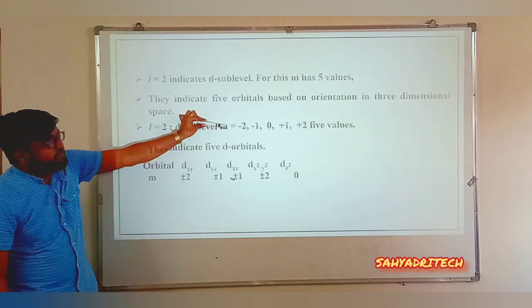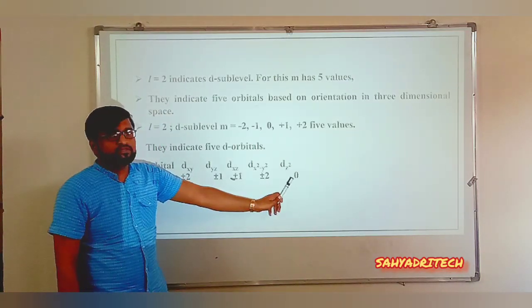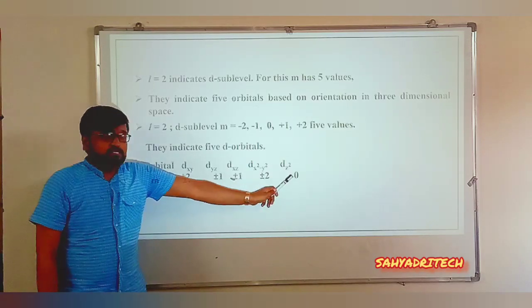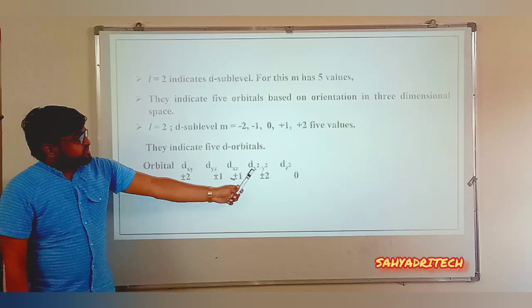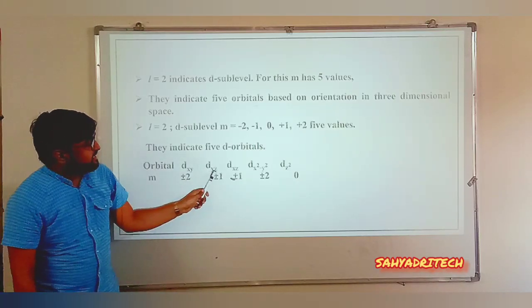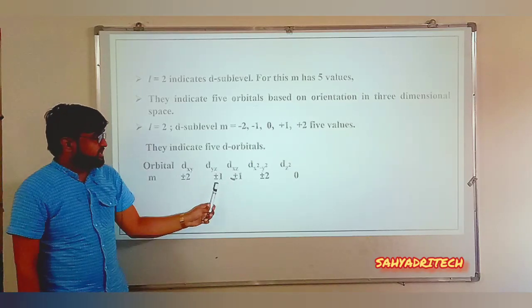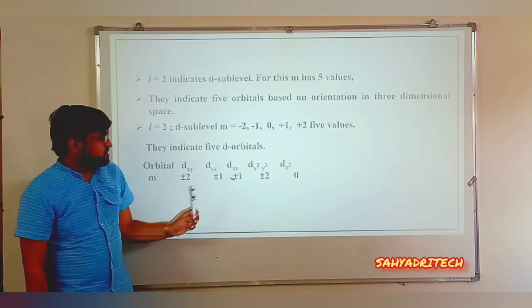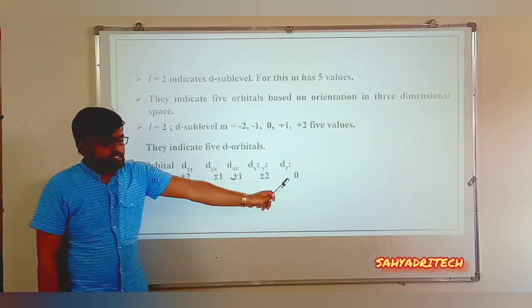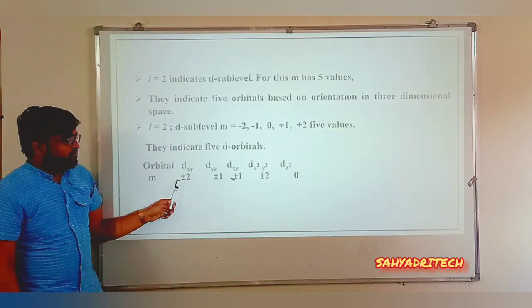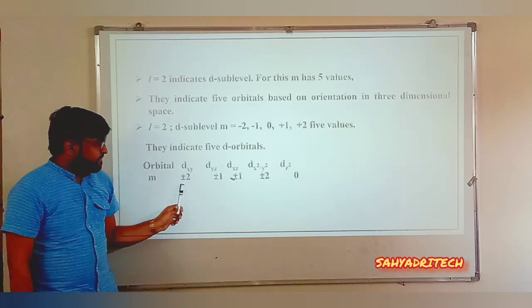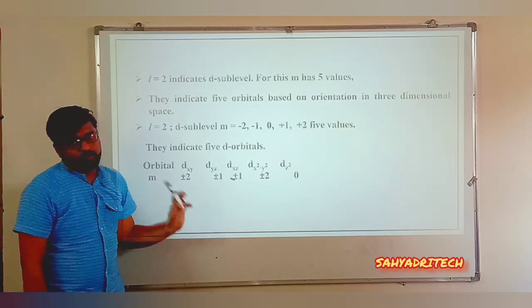Correlating the d orbitals with their M values: Dz² corresponds to M = 0. Dx²−y² and Dxy correspond to M = ±2. Dxz and Dyz correspond to M = ±1.